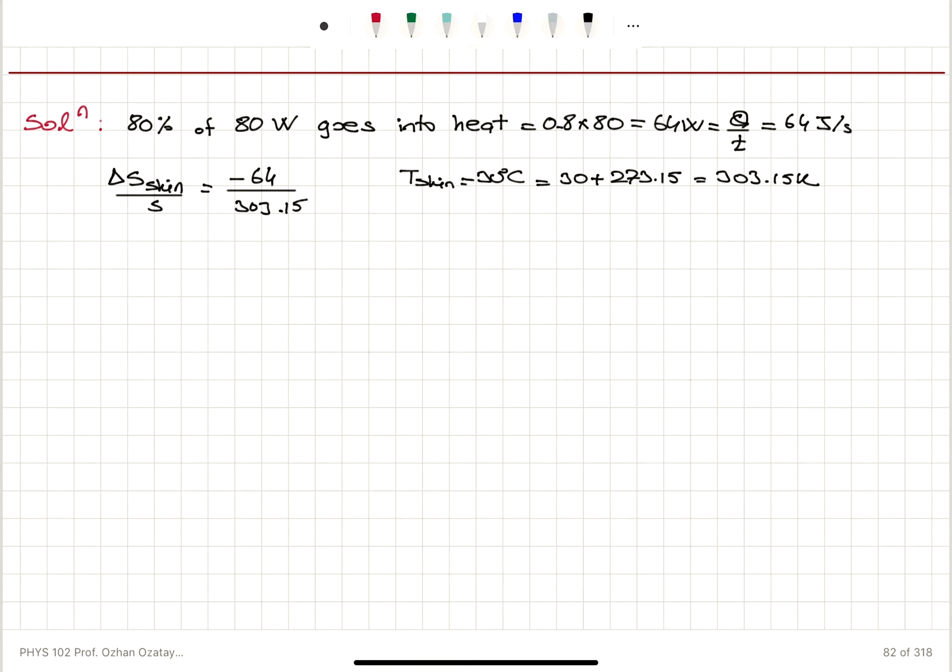And the entropy change of the interior of the body per second will be plus 64. The metabolism produces this heat divided by the temperature of the interior, which is 37 degrees Celsius, 37 plus 273.15, that is 310.15 Kelvin.